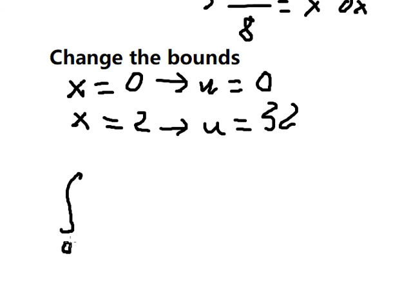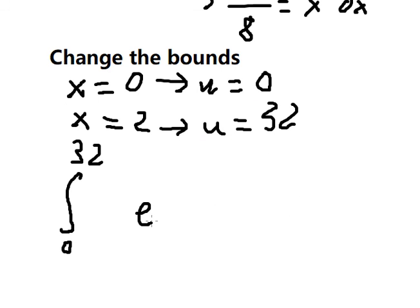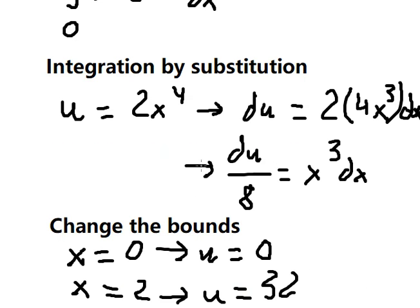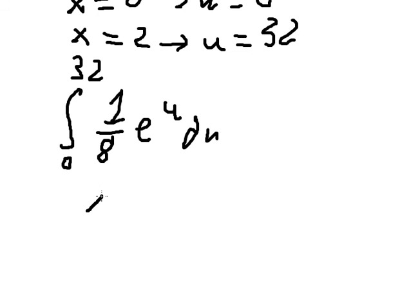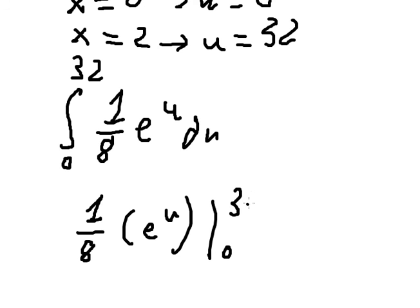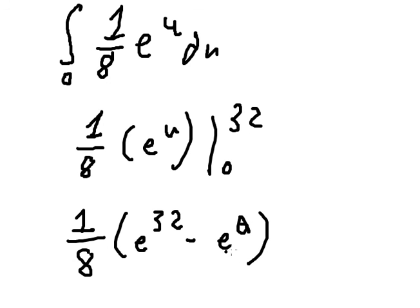So we have the integration from 0 to 32. We replace e to the power of 2x to the fourth with e to the power of u, and x cubed dx is replaced by du over 8. Evaluating, we get (1/8) e to the power of u from 0 to 32. Substituting, e to the power of 0 equals 1, giving us the final answer: (1/8)(e to the 32 minus 1), which we can also write in another form.